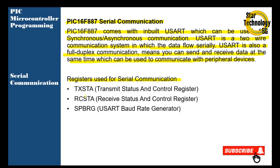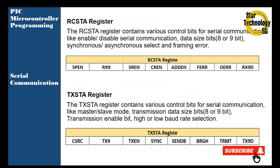The PIC16F887 comes with built-in serial communication. The registers used for serial communication are: TXSTA — Transmit Status and Control Register, RCSTA — Receive Status and Control Register, and SPBRG — USART Baud Rate Generator. The RCSTA register contains various control bits for serial communication like enable/disable serial communication, data size (8-bit or 9-bit), synchronous/asynchronous select, and framing error.